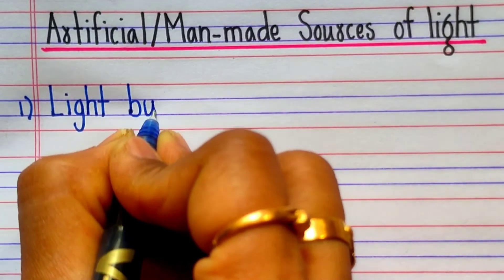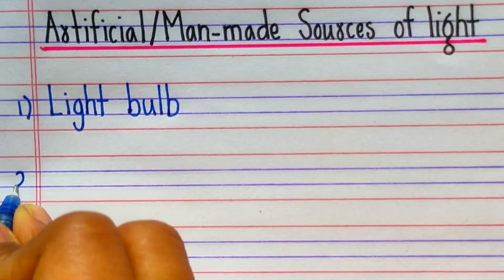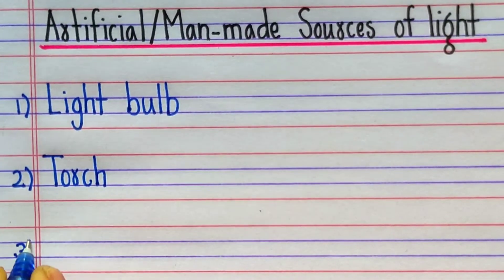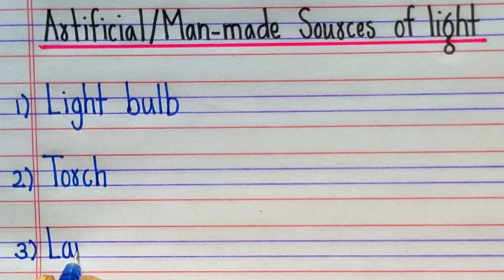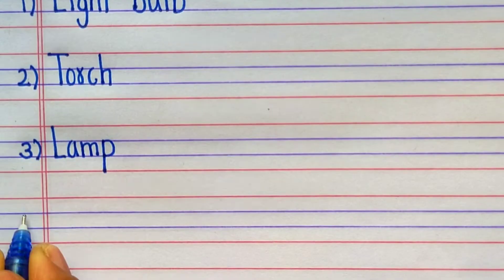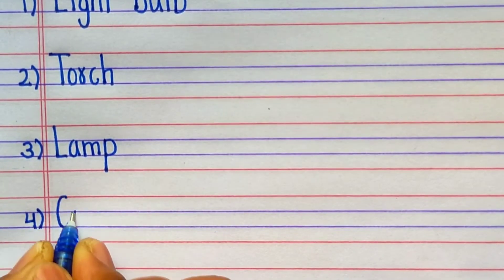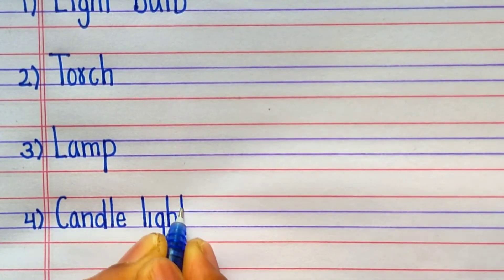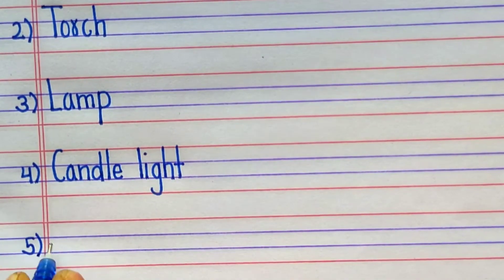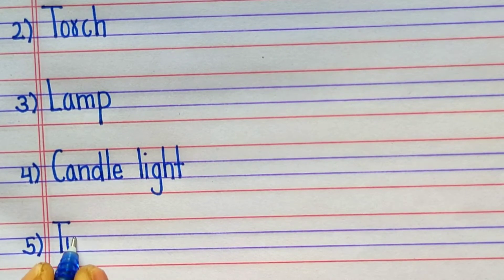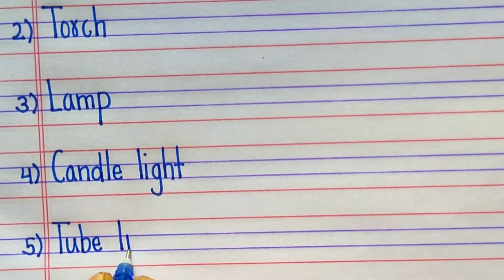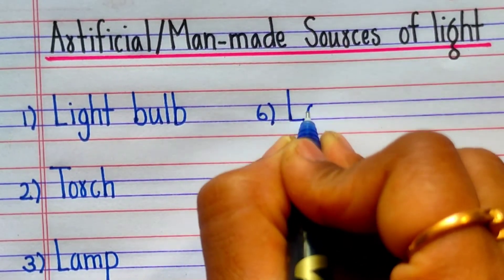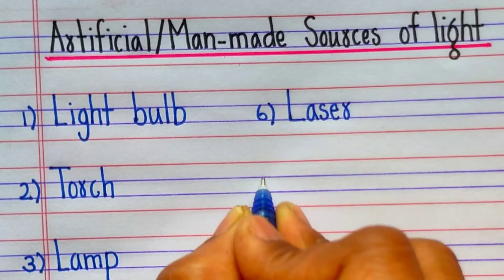B-U-L-B, light bulb. Second one is torch — T-O-R-C-H. Third one is lamp — L-A-M-P, lamp. Fourth one is candle light — C-A-N-D-L-E candle, L-I-G-H-T light. Fifth one is tube light — T-U-B-E tube, L-I-G-H-T light. Sixth one is laser — L-A-S-E-R.